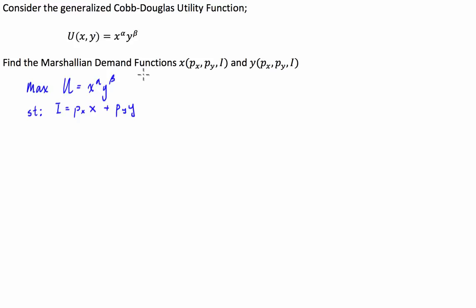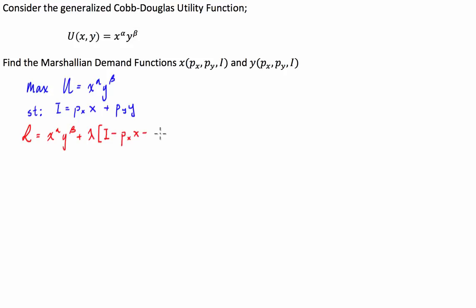The way I'm going to solve it is I'm going to use the method of Lagrange, where I take partial derivatives of the Lagrangian function. So first we have to set up our Lagrangian function. The Lagrangian L is equal to our objective function — the function we're trying to maximise — X to the power of alpha, Y to the power of beta, plus the Lagrangian multiplier times the budget constraint made equal to zero: P of X times X, minus P of Y times Y. We're going to take partial derivatives of this with respect to X, Y, and lambda, and our optimal conditions will be when those partial derivatives equal zero.